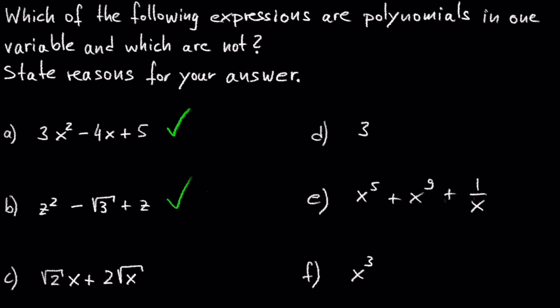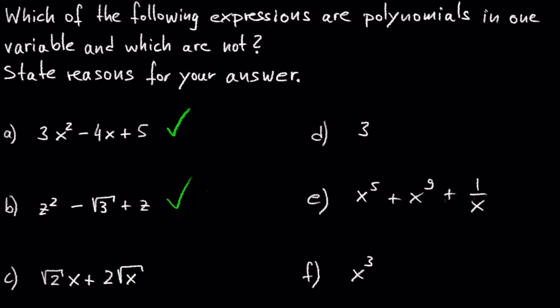In C we have the square root of 2 times x plus 2 times the square root of x. The coefficient of x, which is the square root of 2, is a real number. But the variable x cannot be under a square root in polynomials. So this is not a polynomial.